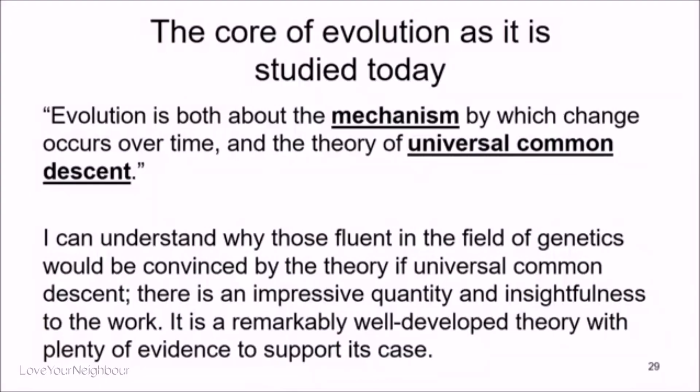These small changes are more important than the natural selection process and random mutation. Evolution is both about the mechanism by which change occurs over time and the theory of universal common descent. This is what biologists tell me — evolution is about the mechanisms by which change occurs over time, and we want to see mechanisms, plus the theory of universal common descent.